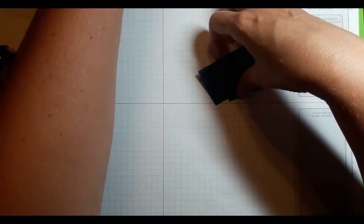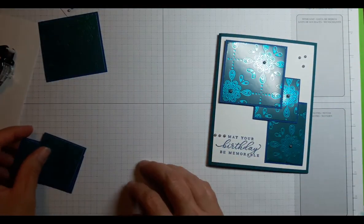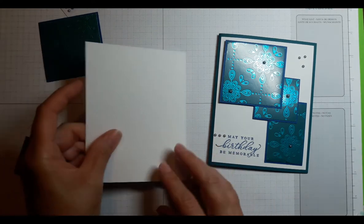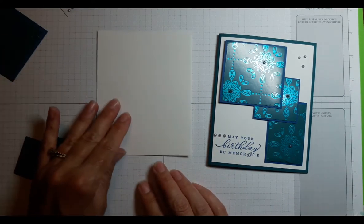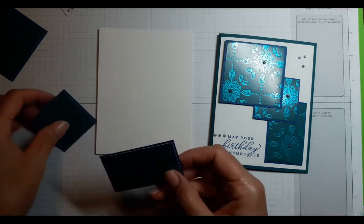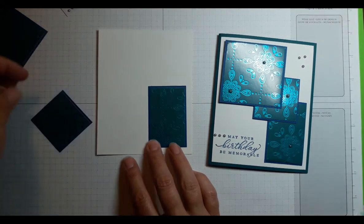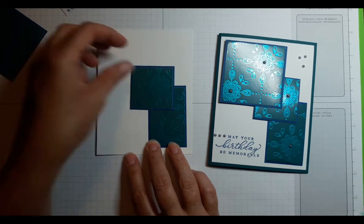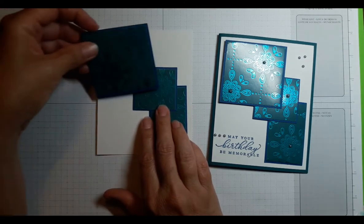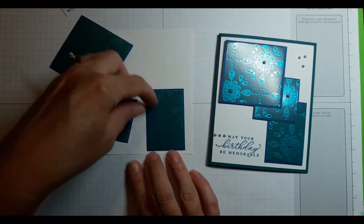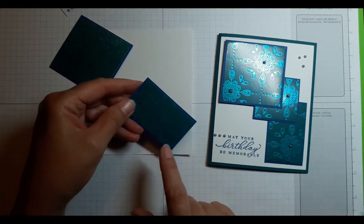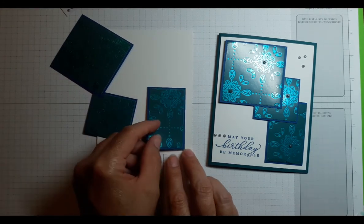So let's take a look at our sample card here and we've got our layer of Whisper White and I'm going to start by just simply placing these on the card and then determining exactly where they're going to go. Now one thing I'm going to look at is in this instance my design is more towards the bottom.